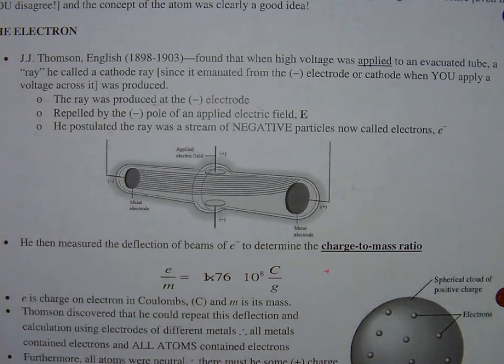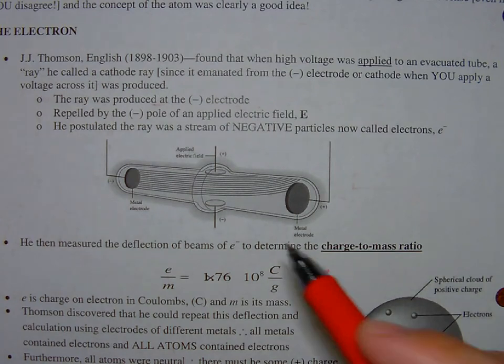But anyway, John Thomson found that when a high voltage was applied to an evacuated tube, a ray, which he called a cathode ray since it emanated from the negative electrode or cathode, was produced when you applied voltage across it.